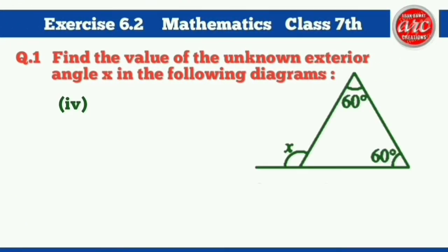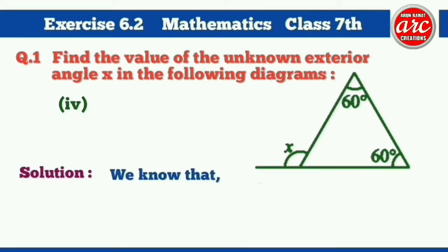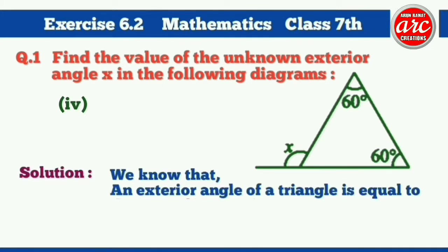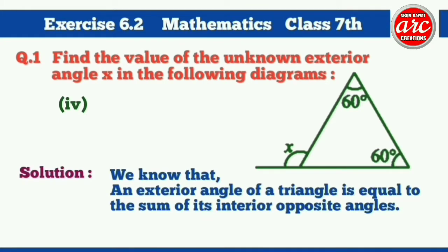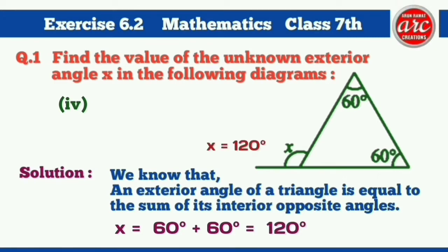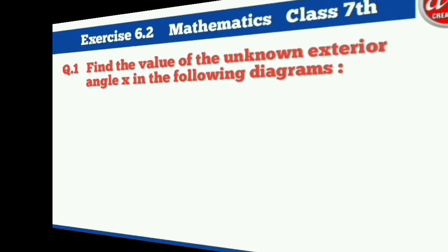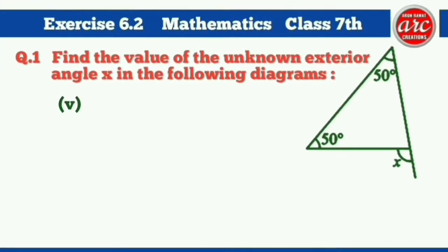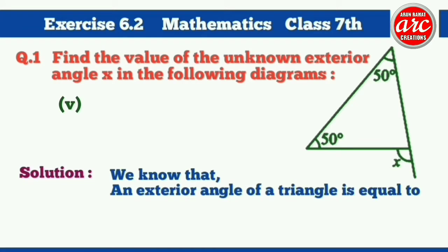Solution of part 4: As we know, an exterior angle of a triangle is equal to the sum of its interior opposite angles. So X is equal to 60 degrees plus 60 degrees, which is equal to 120 degrees. Hence, X is equal to 120 degrees.